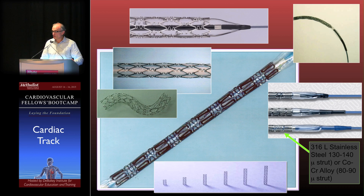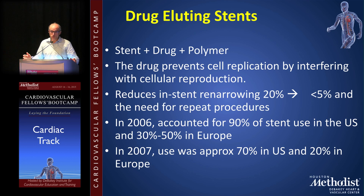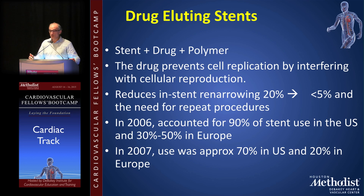But that wasn't perfect. Multiple stent designs, some better than others. There was pretty good evolution in terms of radial strength, strut thickness, etc. But this was still a powerful stimulus for re-narrowing to occur inside the vessels. So what were developed? Drug-eluting stents. And what does a drug-eluting stent consist of? The stent — the metal frame — plus the drug, plus a way to control the release of the drug, and that's the polymer.